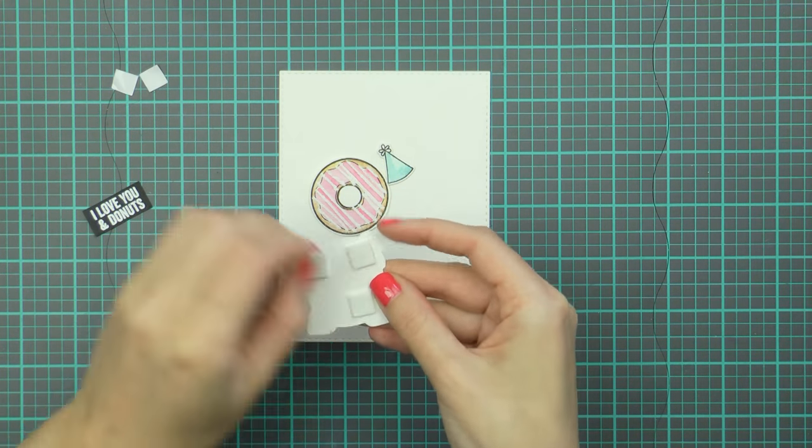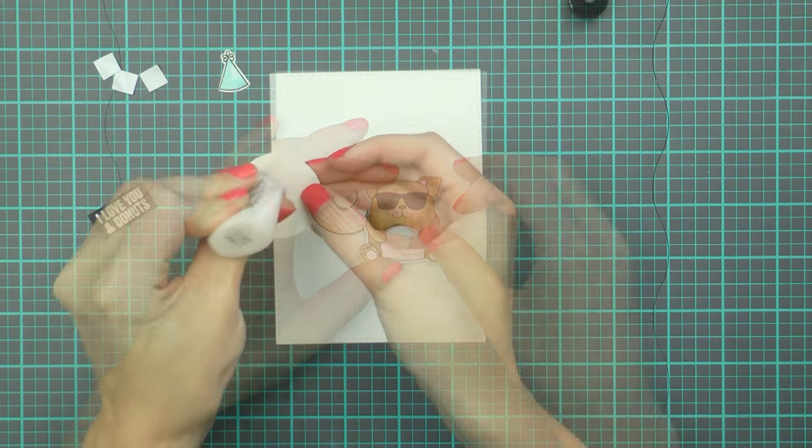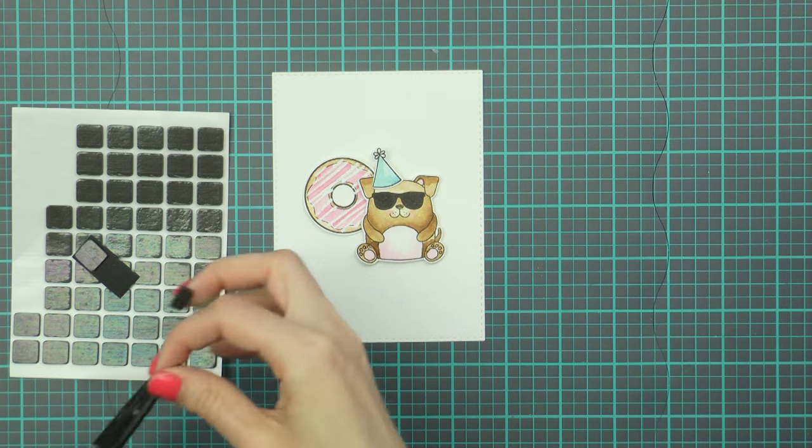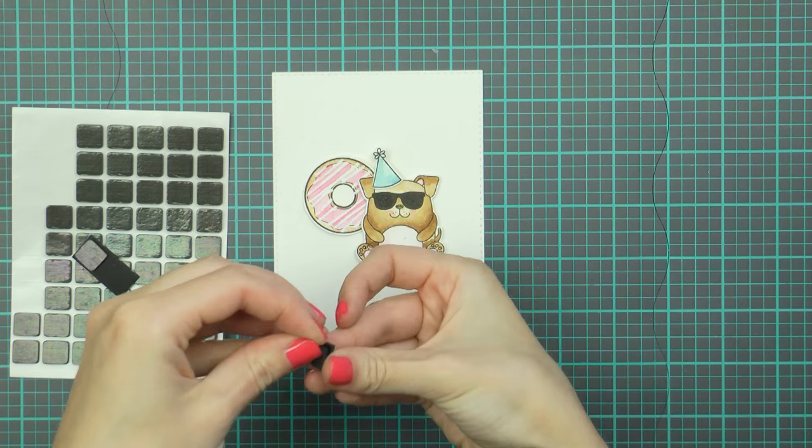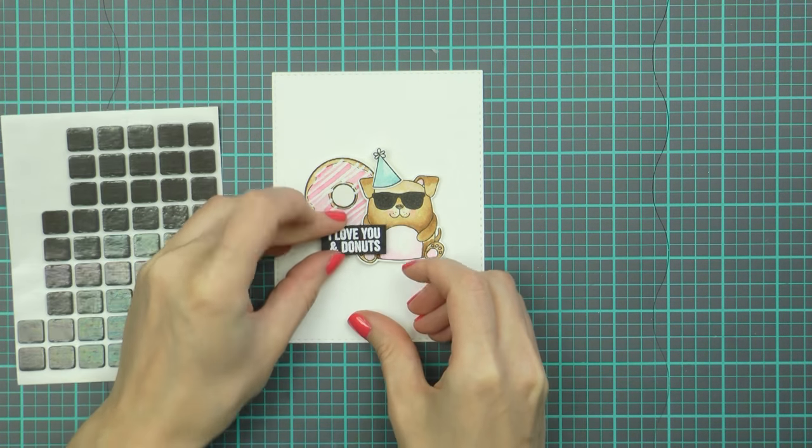I used foam adhesive for the puppy, I wanted to have him popped up on the card, I used glue for the donut and the party hat and then to adhere the sentiment I had to double up on foam adhesive on one side so that it would stay level on the card as it was sort of overlapping the puppy slightly.